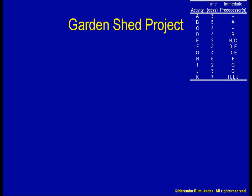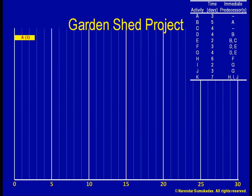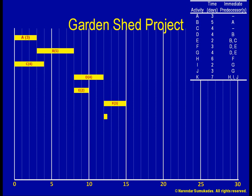Let me now try to put these activities on a timeline. Activity A does not have any predecessors, so it can start right away — it takes 3 days. Activity B can start once A is completed and takes 5 days. Like A, C can also start right away. D has to wait until B is completed. E has to wait for both B and C to be completed, which essentially means until B is completed. F has to wait for both D and E. G also has to wait for both D and E. H has to wait for F. I and J have to wait for G. Finally, K has to wait for H, I, and J.